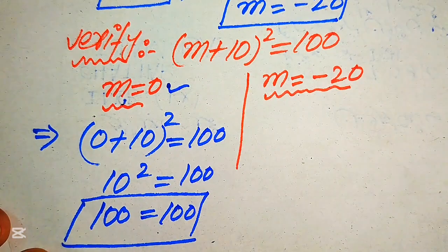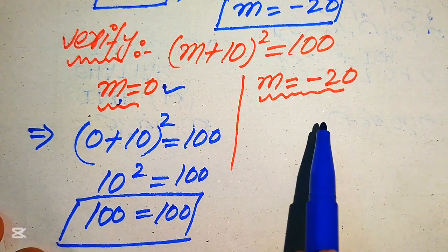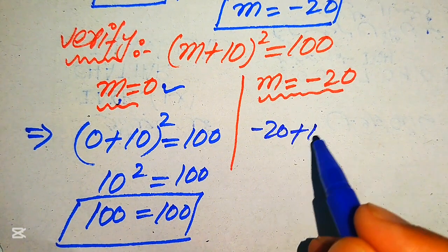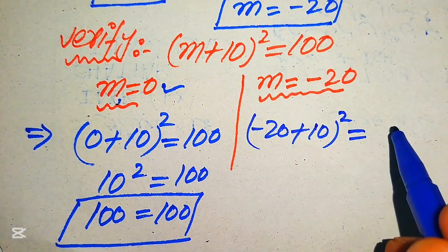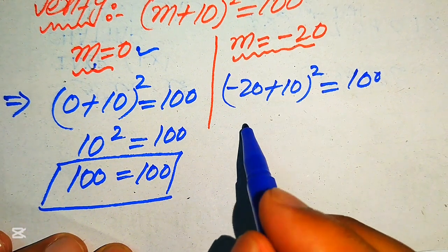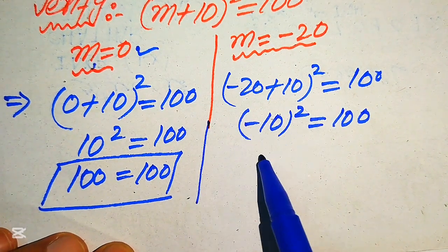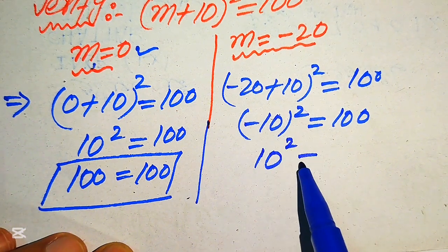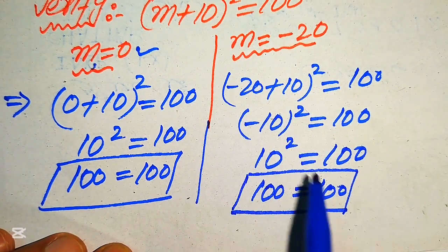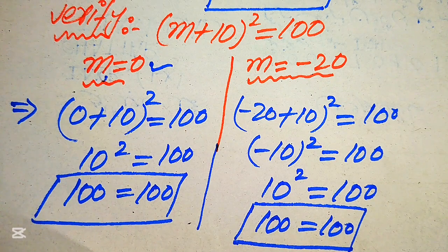This confirms that m = 0 satisfies the equation. Now we verify m = -20: substituting gives (-20 + 10)² = (-10)² = 100, which equals 100. Since the negative squared becomes positive, 10² = 100 = 100. The second value m = -20 also satisfies the given equation. This is the final answer. Thank you for watching — please subscribe to my channel for more exciting videos.